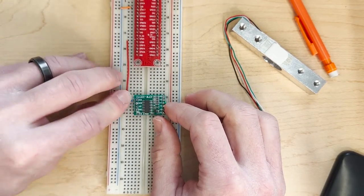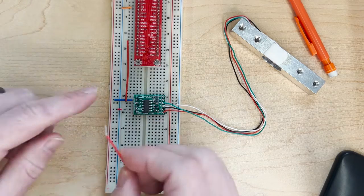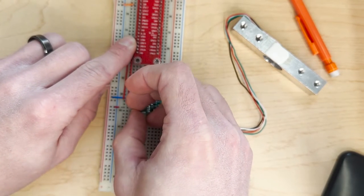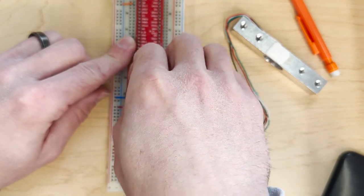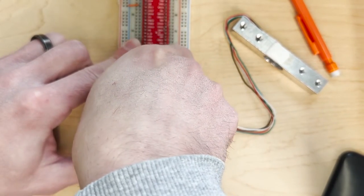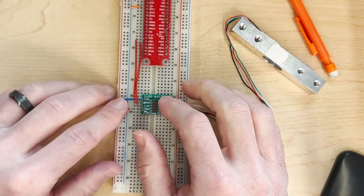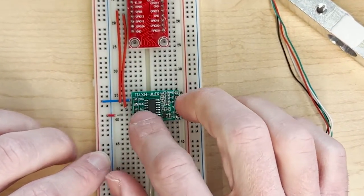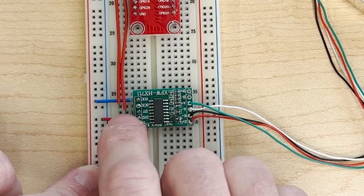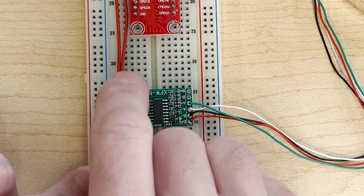And the last one is the data out. So data out I'm going to connect to GPIO 6. GPIO 6 is right below GPIO 5. Okay, so this side of the board is connected correctly. We have three volts, we have the ground connected here, and then we have the serial clock attached to GPIO 5 and the data out to GPIO 6.